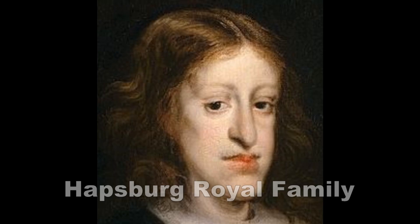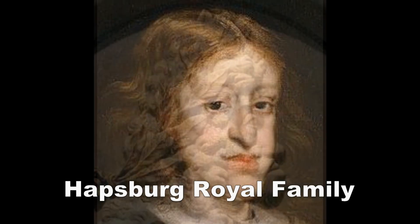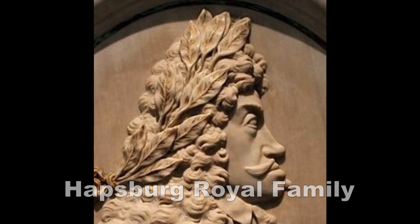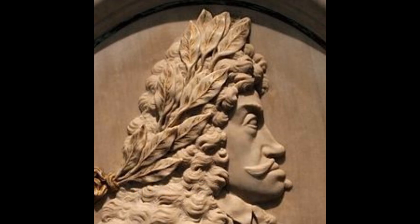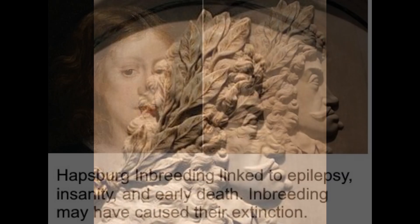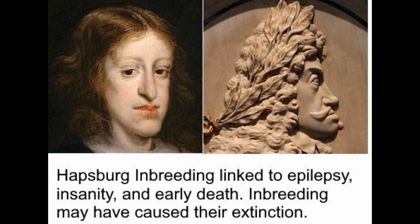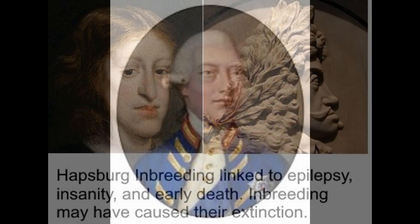The Habsburg royal family practiced inbreeding to maintain control over their throne and produced the famous Habsburg jaw, but it also affected their traits. The Habsburg inbreeding is linked to their problems with epilepsy, insanity, and early death, and many people believe that's what caused their dynasty to go extinct.